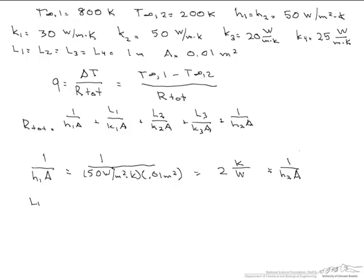Now let's demonstrate how to do a conductive resistance. That's L1 over K1 times the area, which is 1 meter divided by 30 watts per meter K times that area, which is 0.01 meters squared. This equals 3.3 Kelvin over watts.